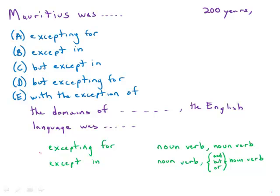First of all, just the simple split between the idioms, excepting for and except in. Excepting for is awkward and not quite correct idiomatically. Except in is correct. So excepting for, excepting for, those are just out.